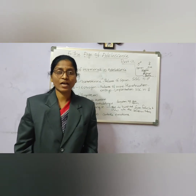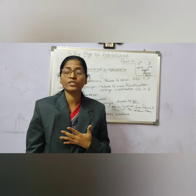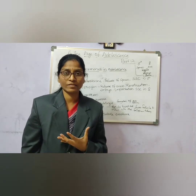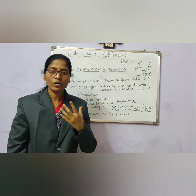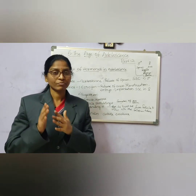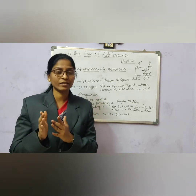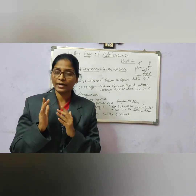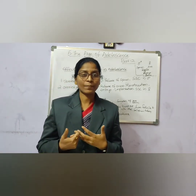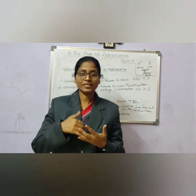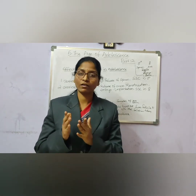Hello students. In our last class we have seen what are the changes taking place during the age of adolescence. Adolescence is the age between childhood and adulthood, that is from 10 to 19 years. It is the age where there are a number of changes taking place in the physical appearance and also inside the body of an adolescent girl or boy.